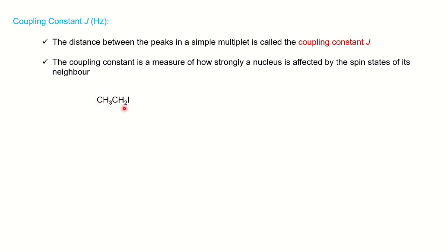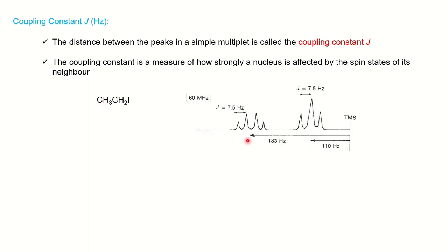The multiplicity follows the N+1 rule. Since CH2 has three neighboring protons, N is three, so three plus one gives a quartet — CH2 will show a quartet. CH3 has two protons in the neighbor, so two plus one gives three — CH3 will show a triplet. So CH3 shows a triplet and CH2 shows a quartet.